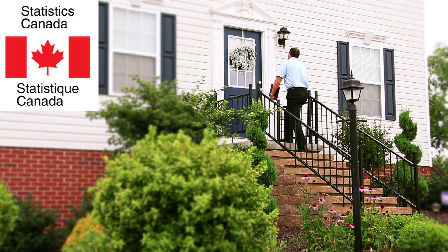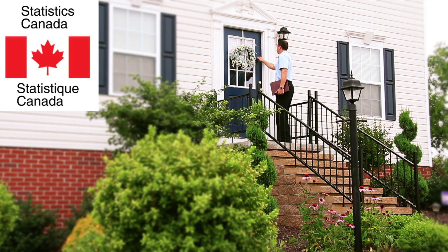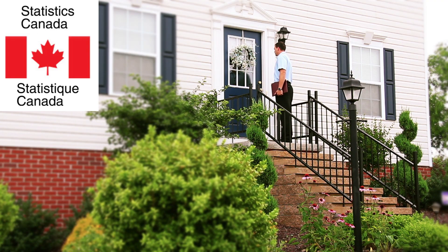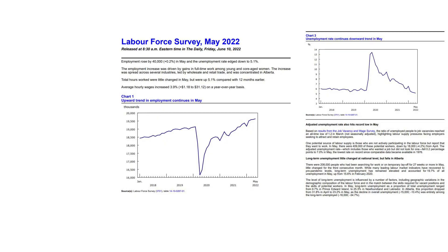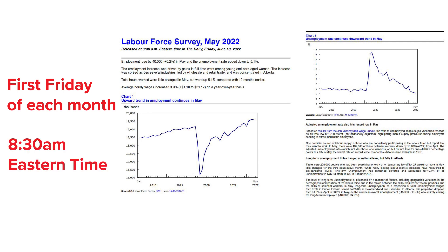Unemployment is calculated by Statistics Canada after field interviewers administer surveys with approximately 54,000 households. The data release is generally published on the first Friday of each month at 8:30 a.m. Eastern Time.